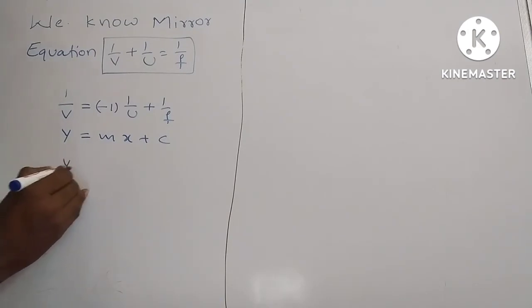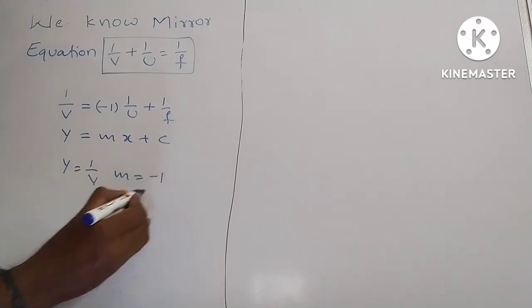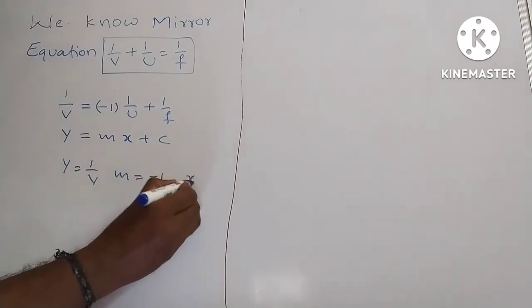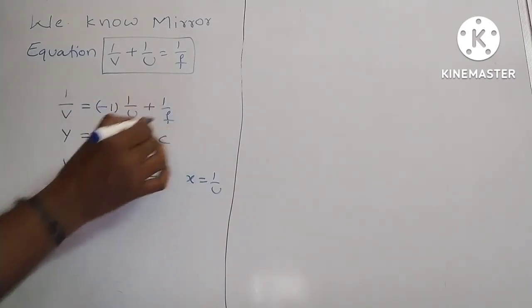Okay, here y is equal to 1 by v, m is equal to minus 1, x is equal to 1 by u, and c equal to 1 by f.